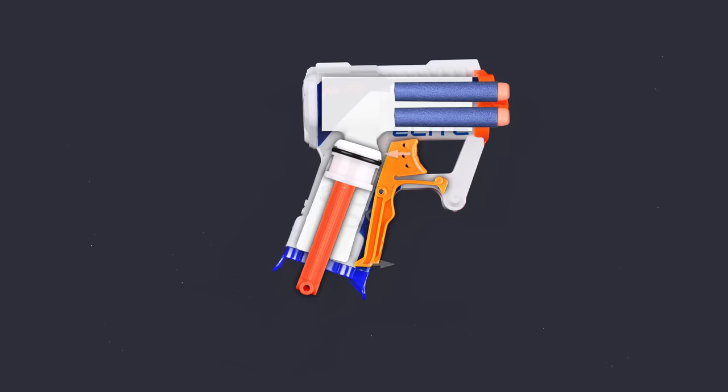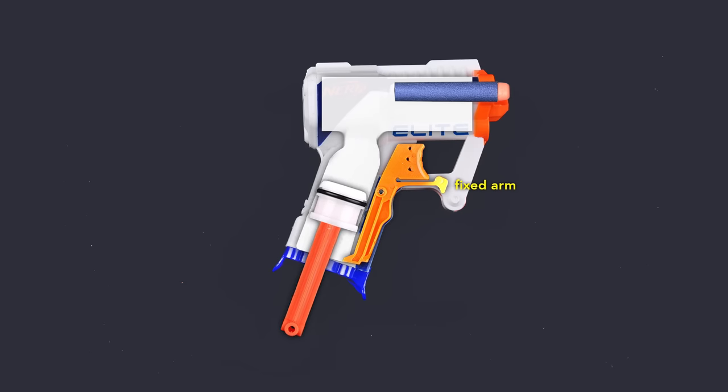The spring forces the plunger up and shoots compressed air into the dart barrel, which ejects the dart. The trigger piece returns to its original position because of this arm. It's a thin section of plastic that acts like a spring. This sets up the blaster to be cocked again.